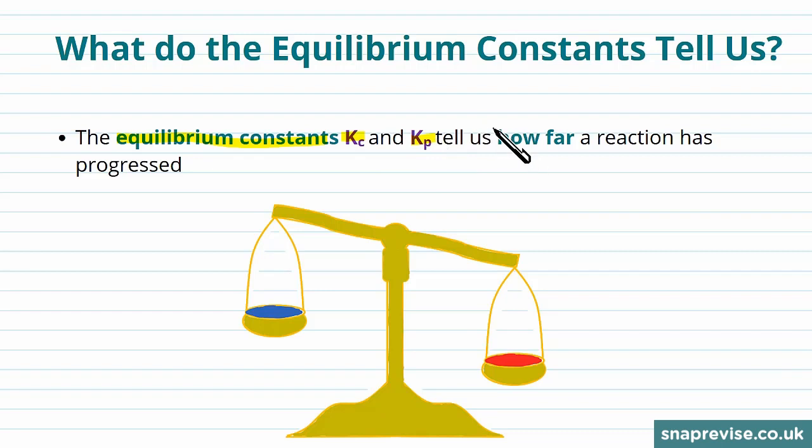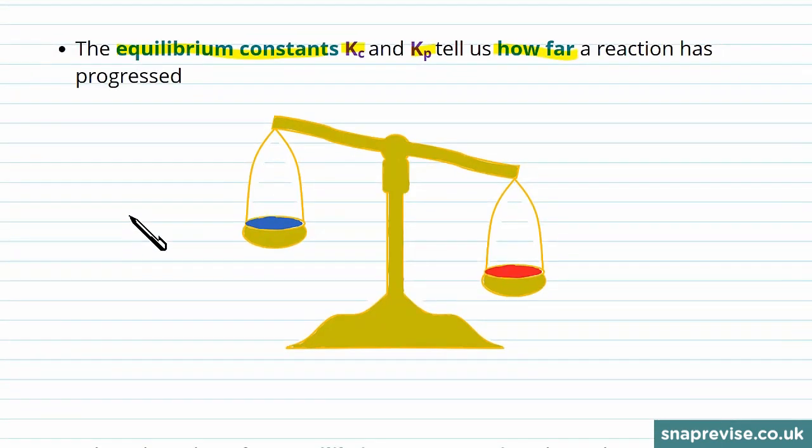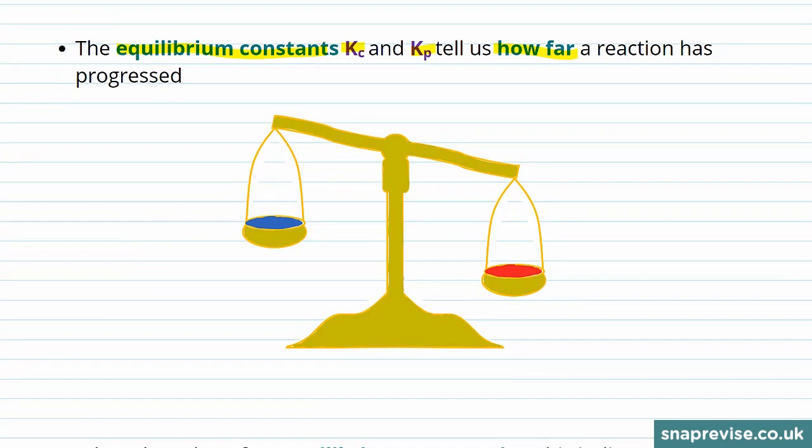And what they actually tell us is how far a reaction has progressed. They tell us whether the equilibrium mix is weighted towards products or towards the reactants.